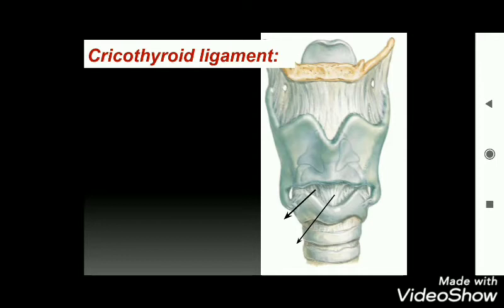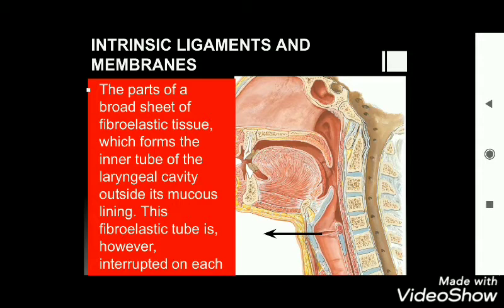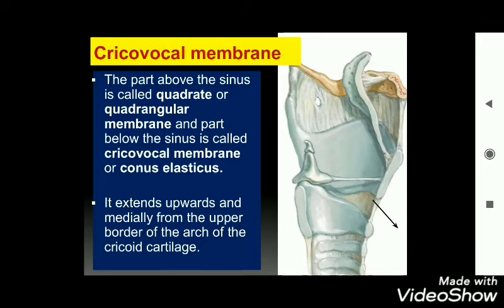The intrinsic ligaments and membranes form parts of a broad sheet of fibroelastic tissue that forms the inner tube of the laryngeal cavity outside its mucous lining. This fibroelastic tube is interrupted on each side. The crico-vocal membrane: the part above the laryngeal sinus is the quadrangular membrane, and the part below is the crico-vocal membrane, also called the conus elasticus. It extends upwards and medially from the upper border of the arch of the cricoid cartilage.